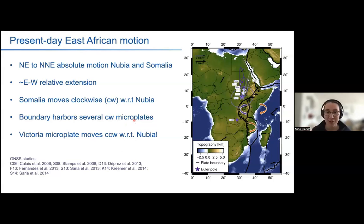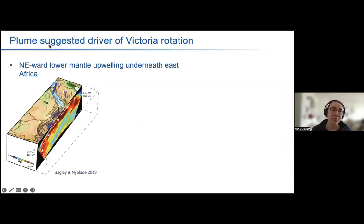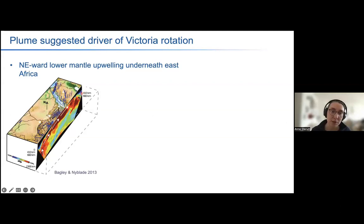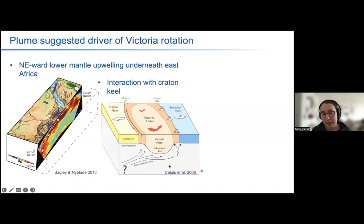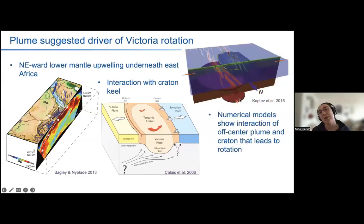But the Victoria Microplate actually moves counterclockwise with respect to Nubia, and it's this enigmatic rotation that we were looking at. Previous authors have suggested a plume or mantle driver for this enigmatic counterclockwise rotation. We know from seismology and isotope studies that there is northeastward mantle upwelling underneath East Africa. We also know that the Victoria Microplate encompasses the Tanzania Craton, which has a cratonic keel that's probably thickest in the south. That led Calais et al. to suggest that the interaction of asthenospheric flow and the lithospheric keel somehow induces the rotation. Numerical models by Kopdev et al. of an off-center plume interacting with this cratonic block show this induced counterclockwise rotation from the asymmetry of the plume impingement.